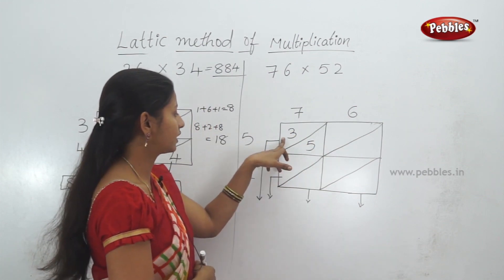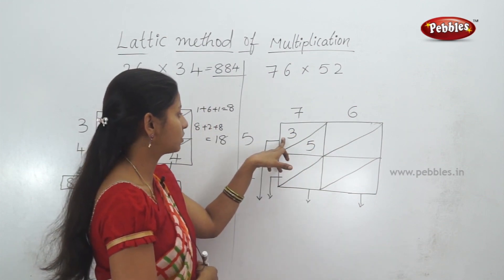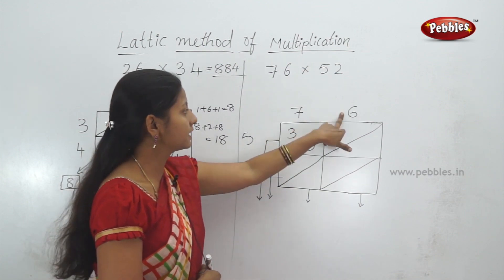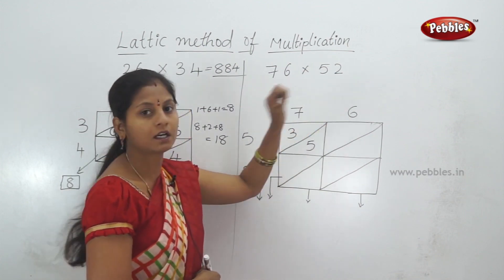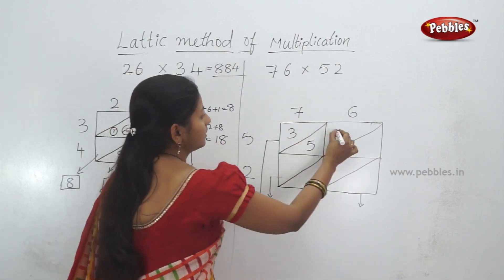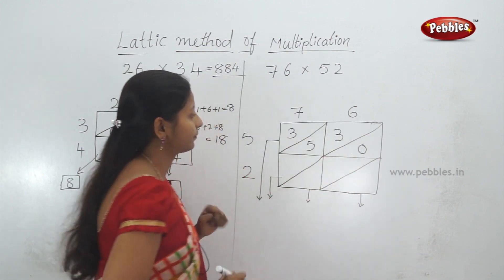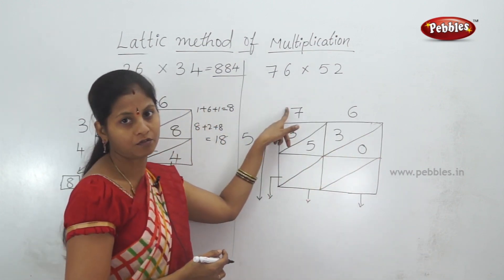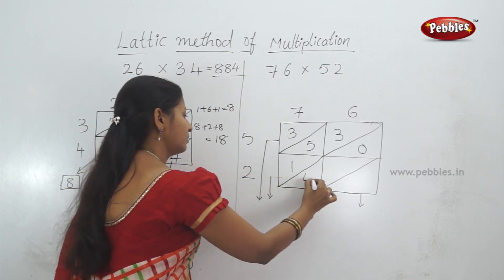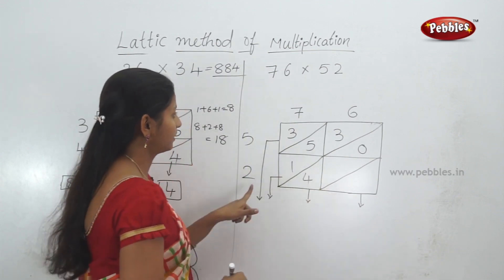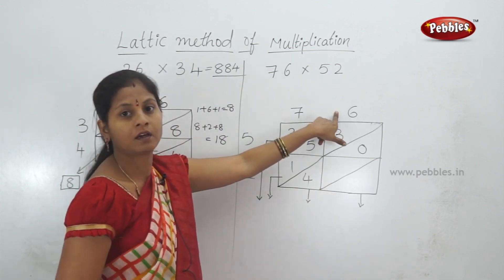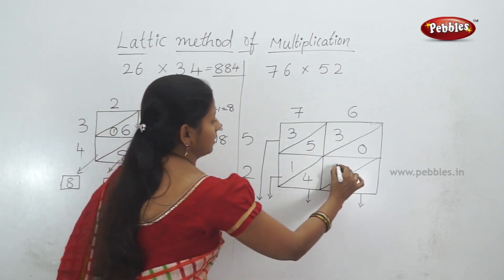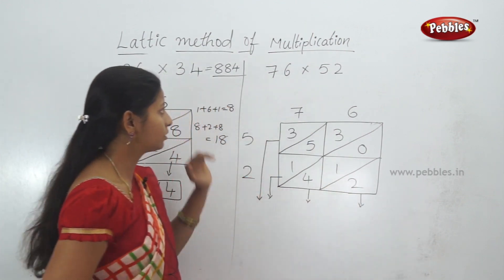5 times 6 is 30 — a 2-digit number, written as 3 and 0. Next, 2 times 7 is 14, written as 1 and 4. Then 2 times 6 is 12, written as 1 and 2. So we have arranged the numbers and completed the multiplication.